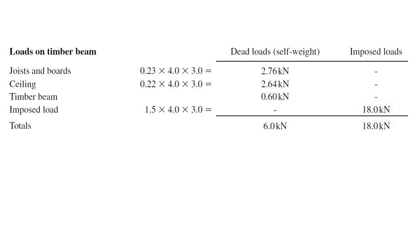Now we can find total dead and imposed loads. Get the sum of these three values. We can get total dead load as 6 kN. Since we have only one imposed load, total imposed load will be 18 kN.